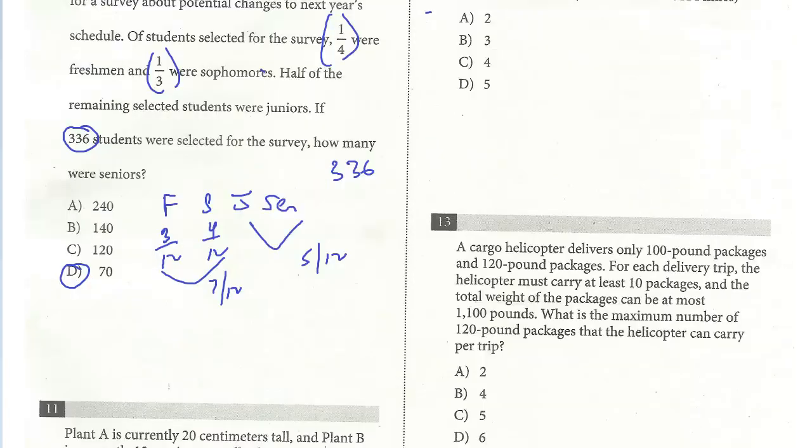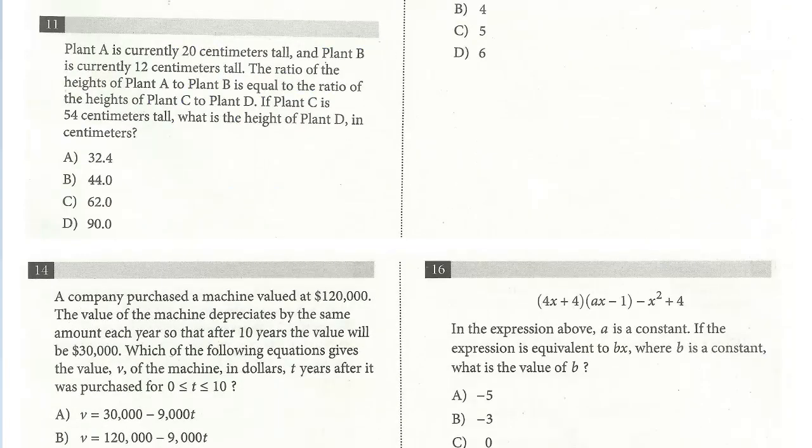Let's take a look at question 11. Plant A is currently 20 centimeters tall and Plant B is currently 12 centimeters tall. The ratio of the heights of Plant A to Plant B is equal to the ratio of the heights of Plant C to Plant D. If Plant C is 54 centimeters tall, what is the height of Plant D in centimeters?